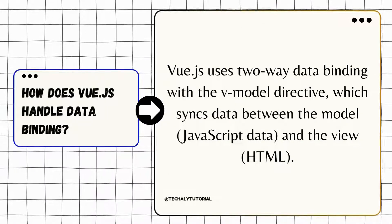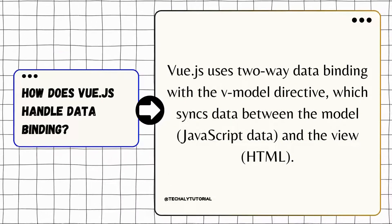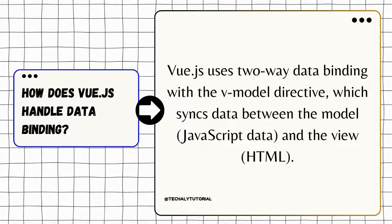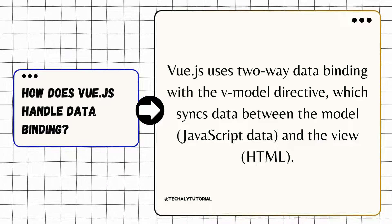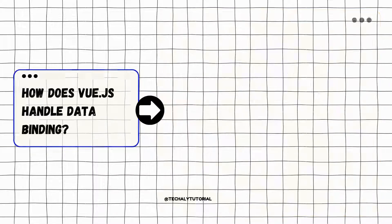Data binding in Vue.js: Vue offers two-way data binding with the v-model directive, allowing synchronized updates between JavaScript data (model) and HTML (view).